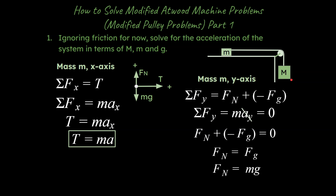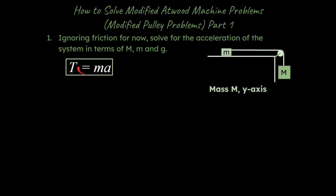Now we have to deal with big M — we haven't drawn its free body diagram yet. So we're going to draw the free body diagram for big M. Now check this out: I'm going to make down positive for big M. That may seem strange, but you are in charge of the axis. In this case it makes the math easier, because big M accelerates downward at the same rate that little m accelerates to the right — they have the same acceleration. Making down positive means the signs of the accelerations match up and we avoid problems mathematically.